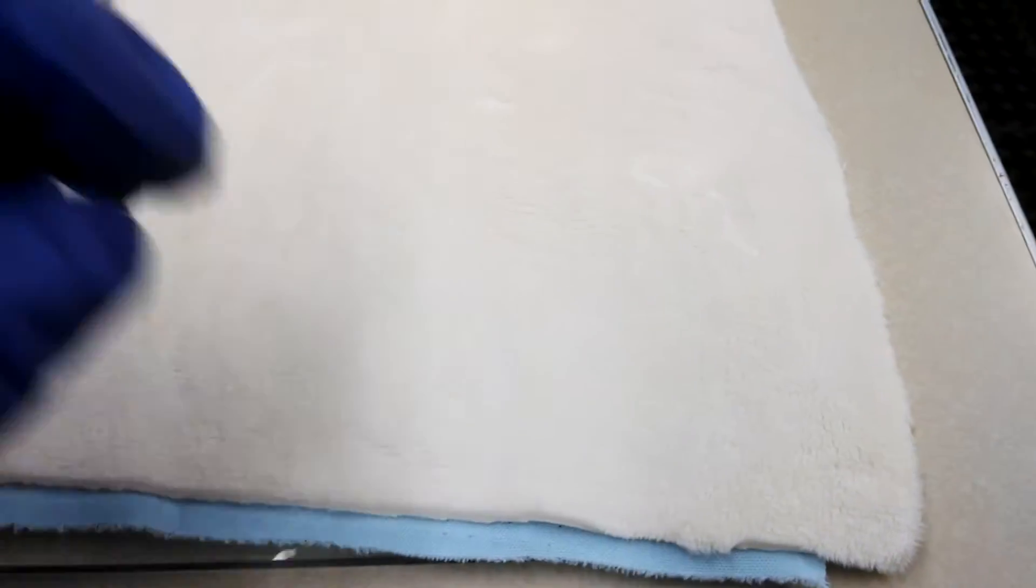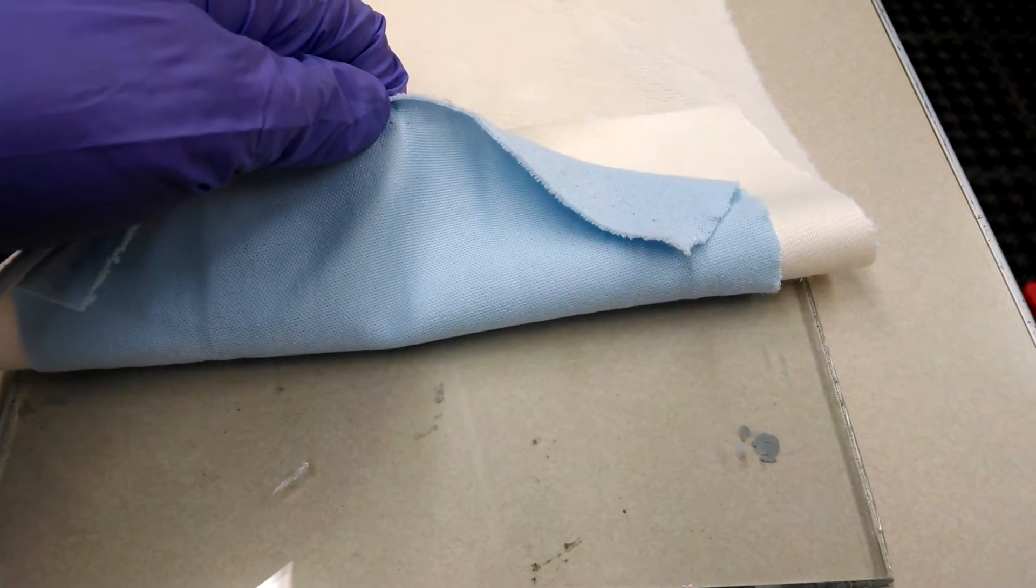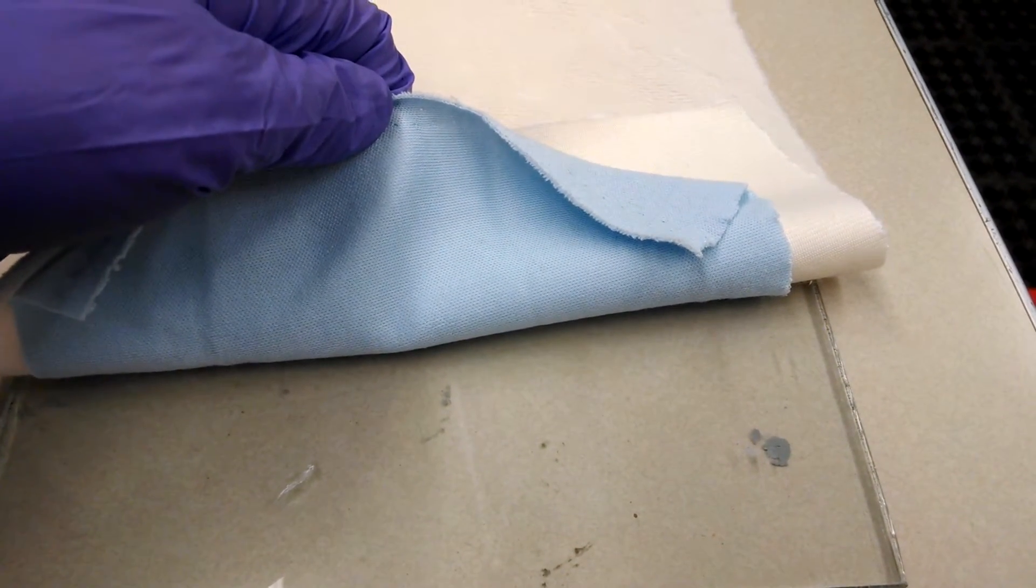So yeah, this is how we're going to do the final polish. This is our polishing surface. As you can see, we have our piece of glass. The back side's a little bit dirty, but the front has been cleaned with a razor blade.